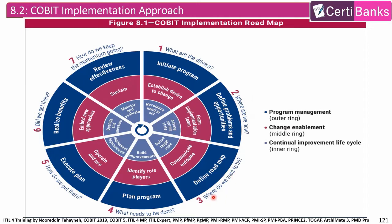In the third phase — where do we want to be? — we define a roadmap as part of Program Management, communicate outcomes as part of Change Management, and define target state as part of the Continual Improvement Life Cycle. In the fourth phase — what needs to be done? — we plan the program as part of Program Management, identify role players as part of Change Enablement, and build improvement as part of the Continual Improvement Life Cycle.